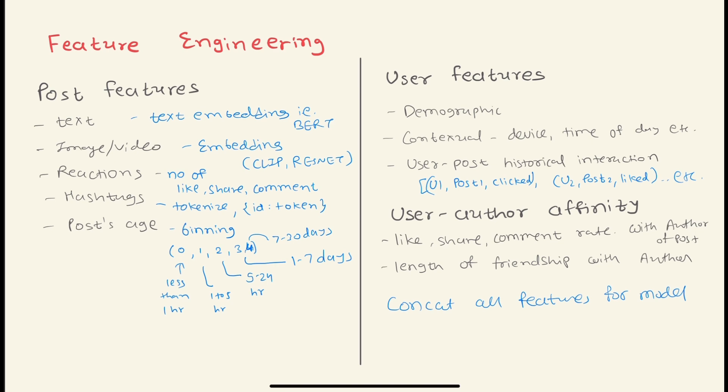Then user-author affinity - here, the author is someone who has posted the particular post. What's the rate of likes, shares, comments between user and author in the past historical data, and then how long they are friends.